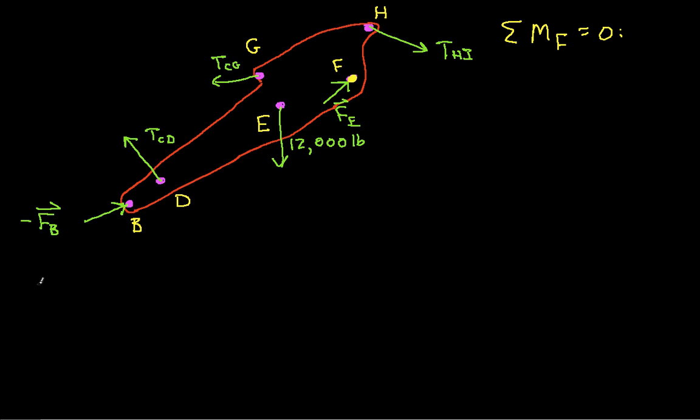Okay, so we'll have R B F cross minus F B. That gives us the moment due to F B, plus R D F cross T C D. This is minus T C D lambda hat C D.